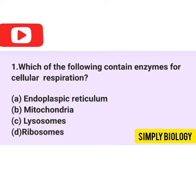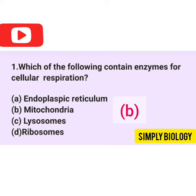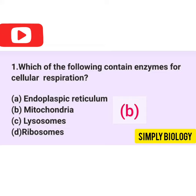Question 1. Which of the following contain enzymes for cellular respiration? The answer is B: Mitochondria.